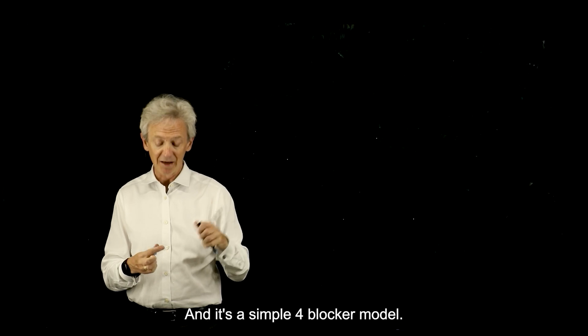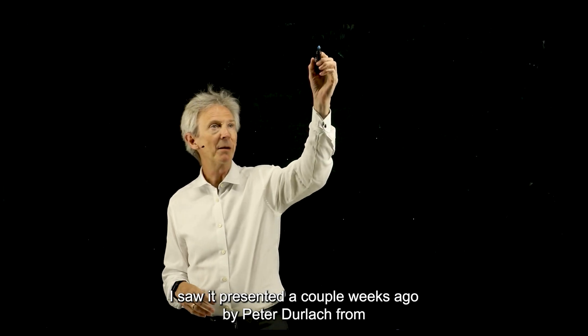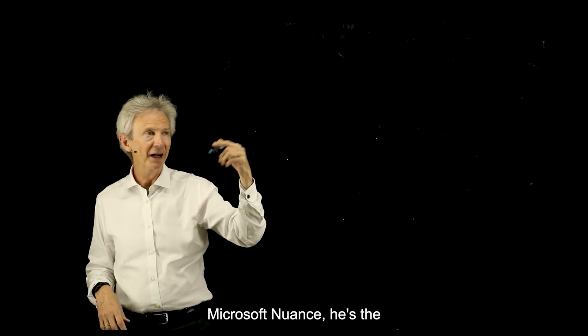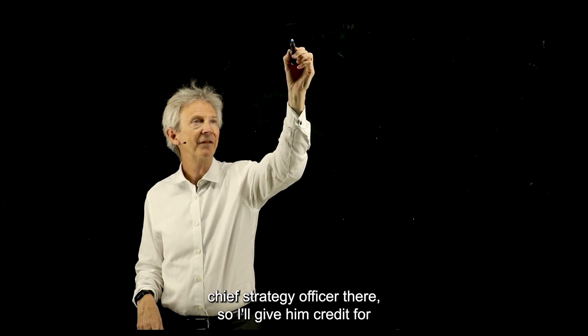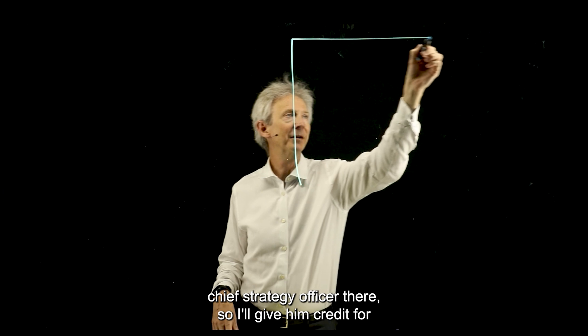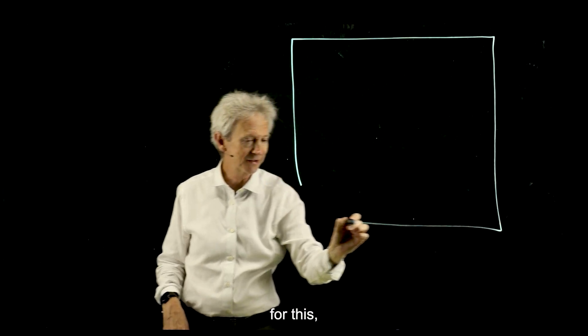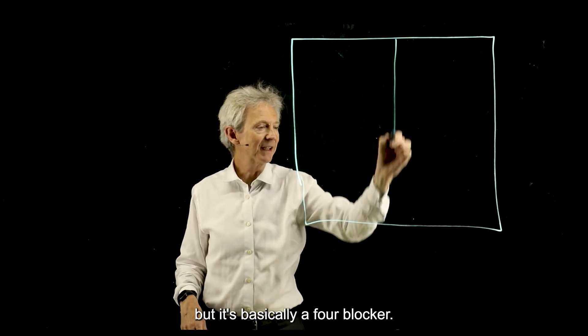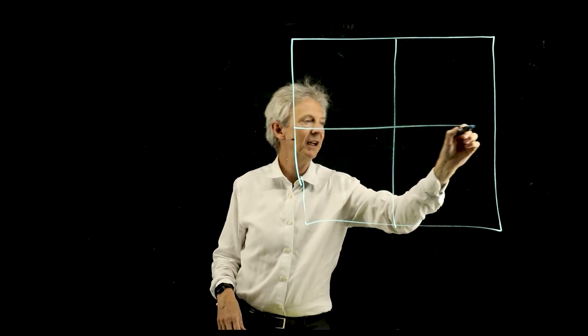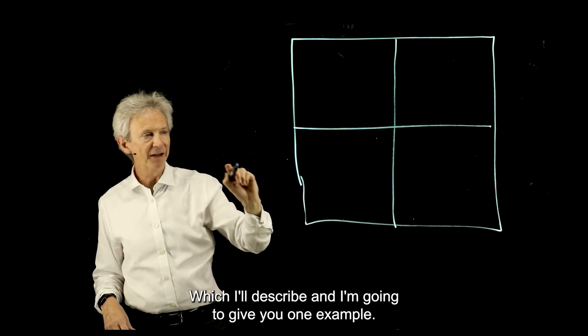It's a simple four-blocker model. I saw it presented a couple of weeks ago by Peter Durlach from Microsoft Nuance. He's the chief strategy officer there, so I'll give him credit for this. It's basically a four-blocker, which I'll describe and I'm going to give you one example.